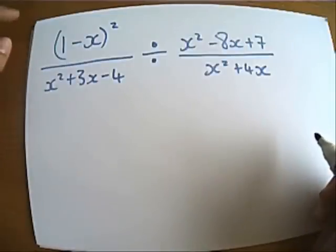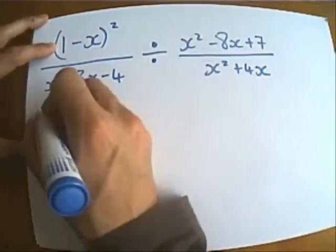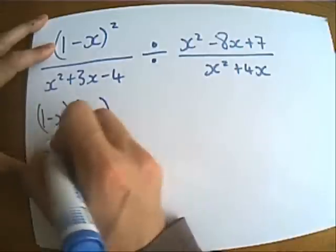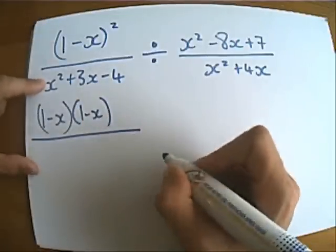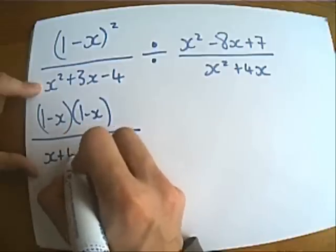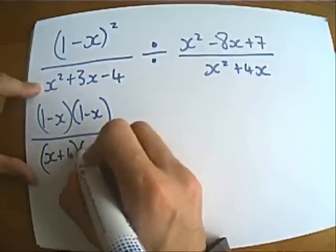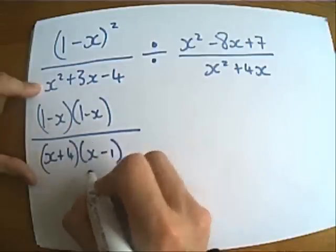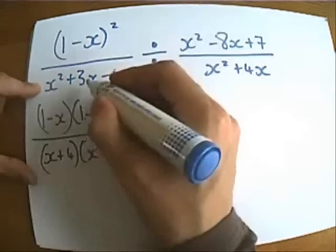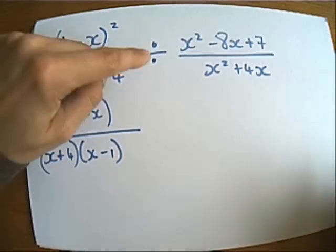So it doesn't really matter what order we do those in. So let's just start on this. I'm going to rewrite this as 1 minus x times 1 minus x, and I'm going to factorise what's on the bottom here. So I think it's going to be x plus 4, x minus 4. Let's just check that, x squared take an x, add 4x, give me my plus 3x, minus 4. Okay, fantastic.